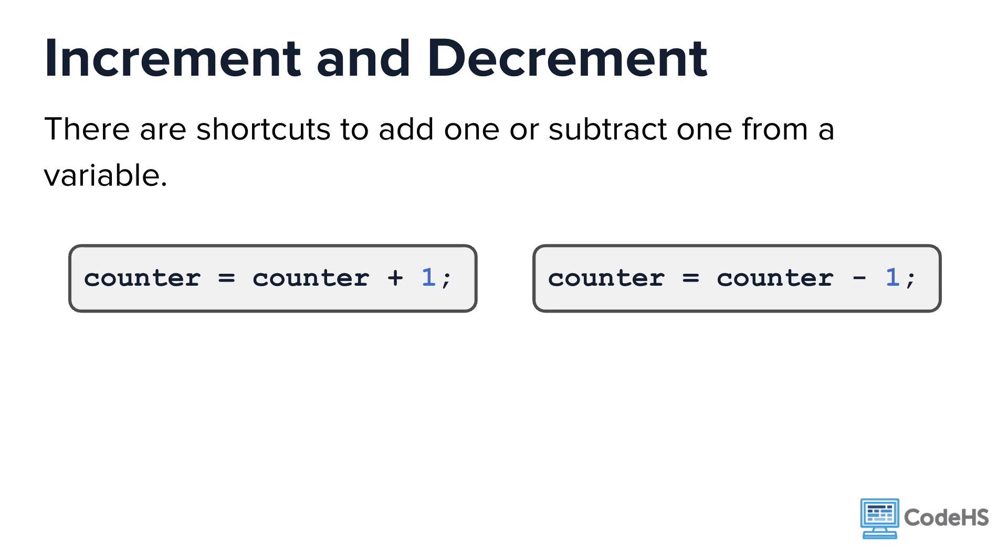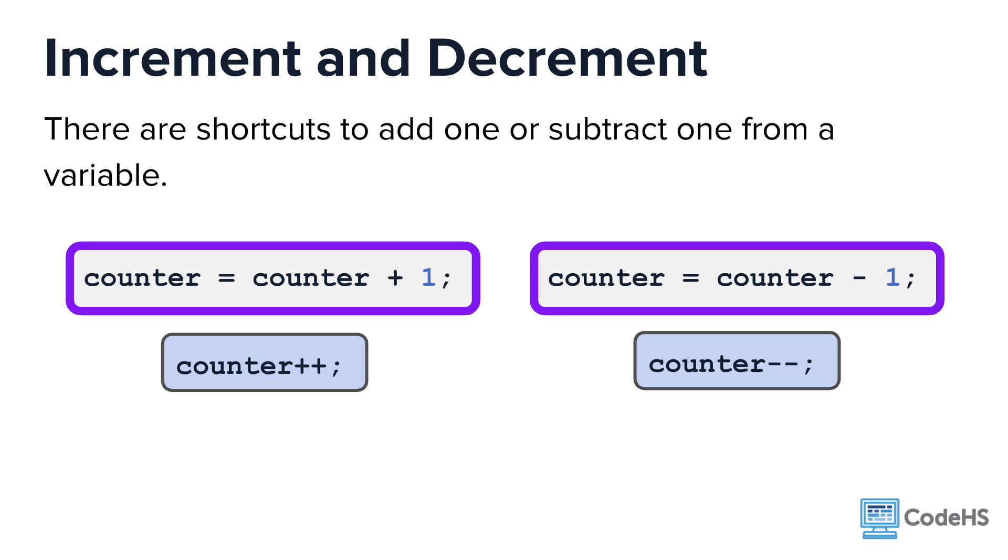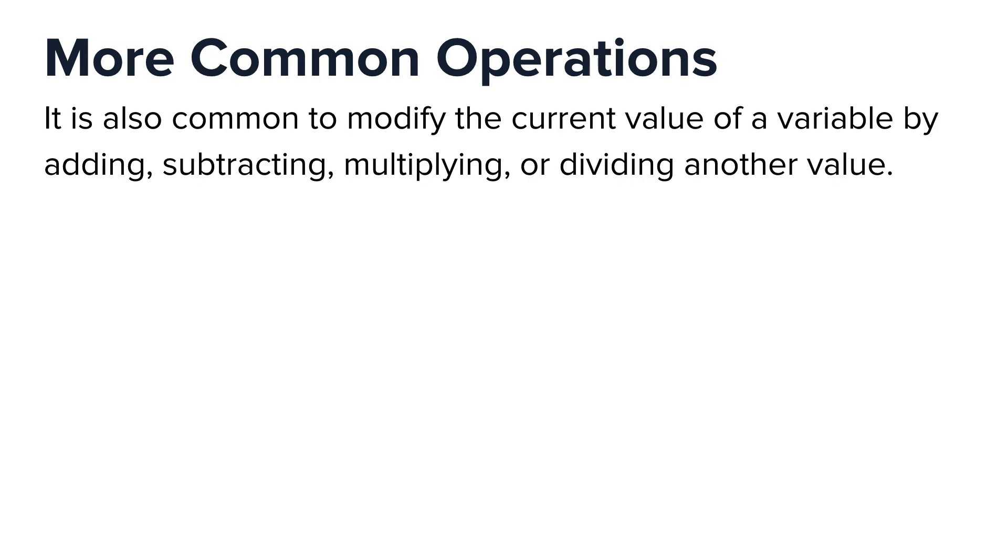Instead of writing counter equals counter plus 1, you can use counter plus plus. And similarly, instead of writing counter equals counter minus 1, you can write counter minus minus. These shortcuts do the exact same thing as their longer counterparts. They update the current status of the variable by adding or subtracting 1. In addition to adding and subtracting 1,